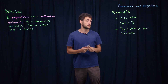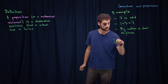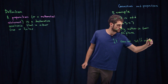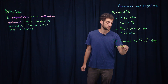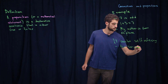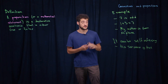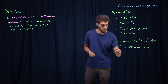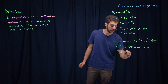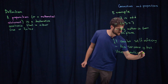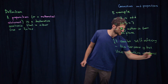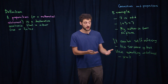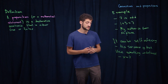Why might some sentences not be a mathematical statement? A sentence can be self-referring, such as 'this sentence is true.' We cannot determine if the sentence is true or false. Or it may use something undefined, like 'x is equal to 7.' Unless we define what we mean by x, we cannot check if it's true or false, so it's not a mathematical statement.